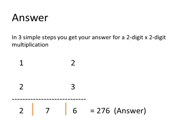1 into 3, what we get is 1 into 3, we get 6, then 1 into 3 plus 2 into 2, that is 3 plus 4 that is equal to 7, that is the middle number, and then 1 into 2, that is 2. So we ultimately get the answer as 276.